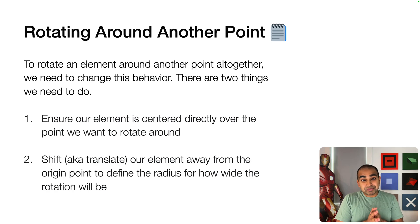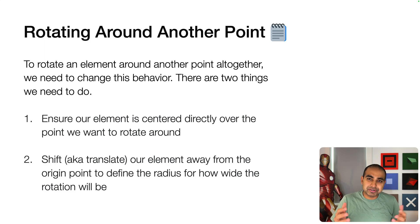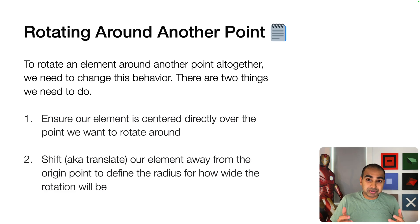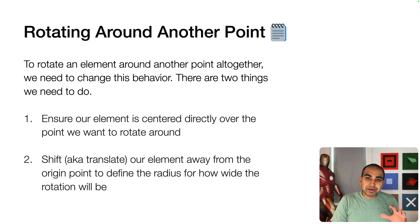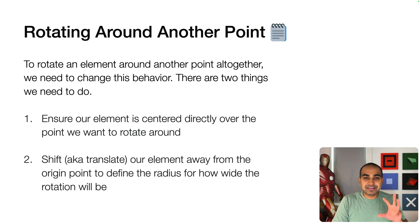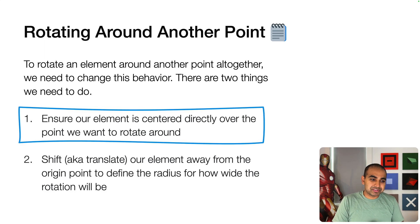To rotate an element around another point altogether, there are two things we need to do. One: make sure the element is centered directly over the point it will rotate around. Two: shift or translate the element away from the origin point. Both of these sound pretty abstract, so let's go into more detail, since a lot of our coding will depend on how we interpret these two points.